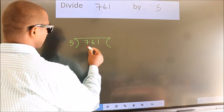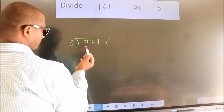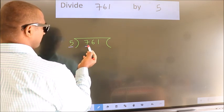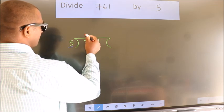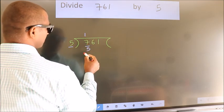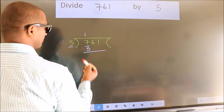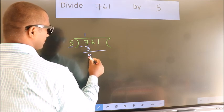here we have 7, here 5. A number close to 7 in the 5 table is 5. Once 5 is 5. Now we should subtract. We get 2.